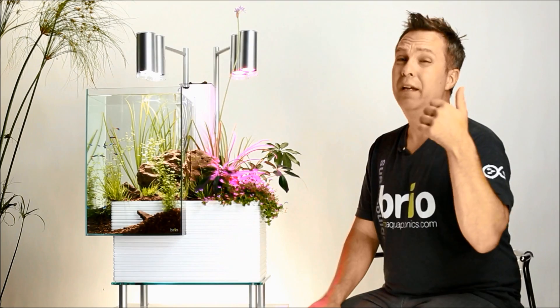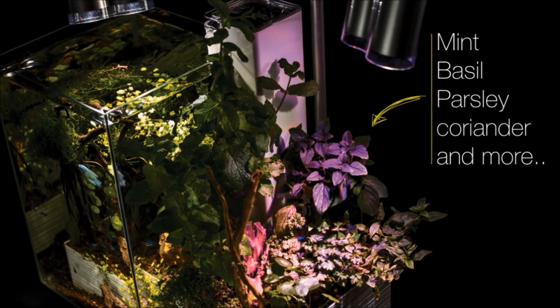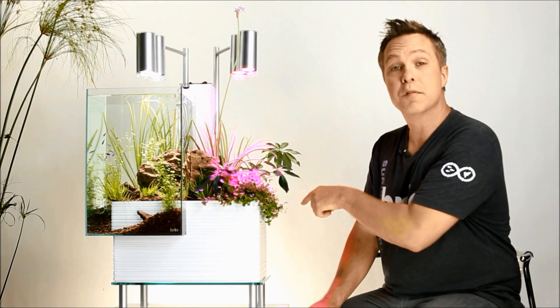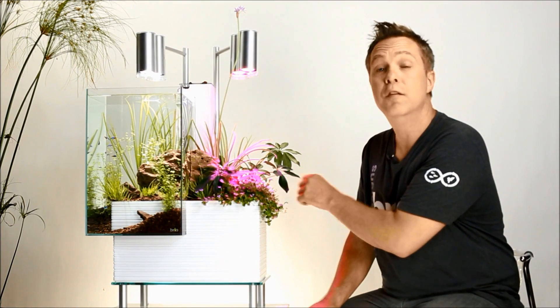Having a Brio creates a lot of benefits. You can enjoy herbs like mint, basil, chive, lettuce year-round in your system. The great thing about it, because the water of the aquarium flows into your plant bed continuously, you don't need to water your plants. So that makes it a lot easier.